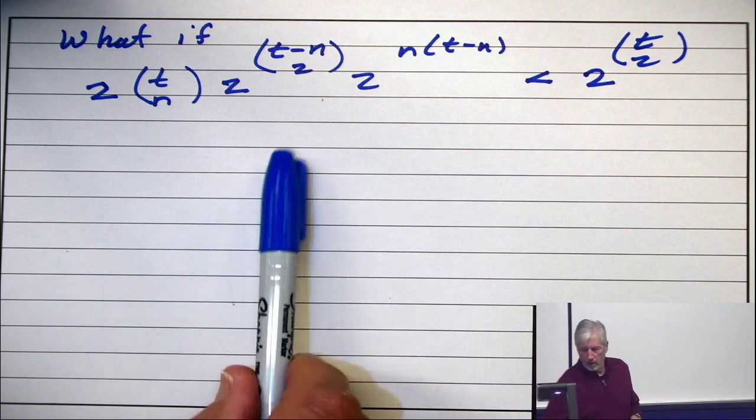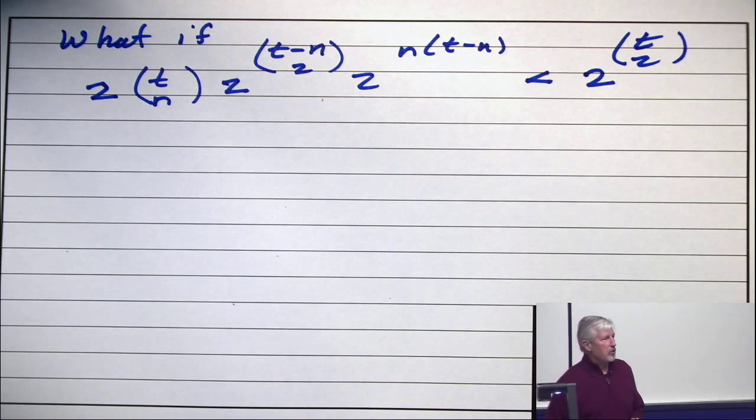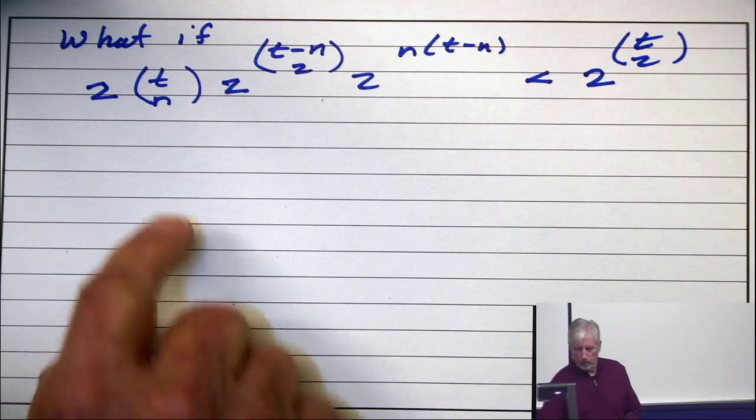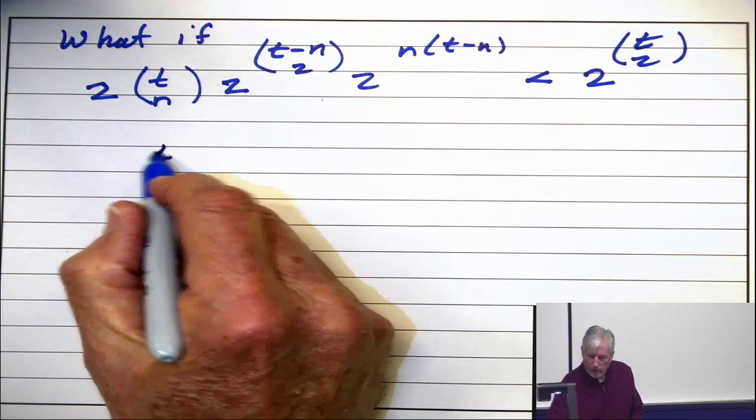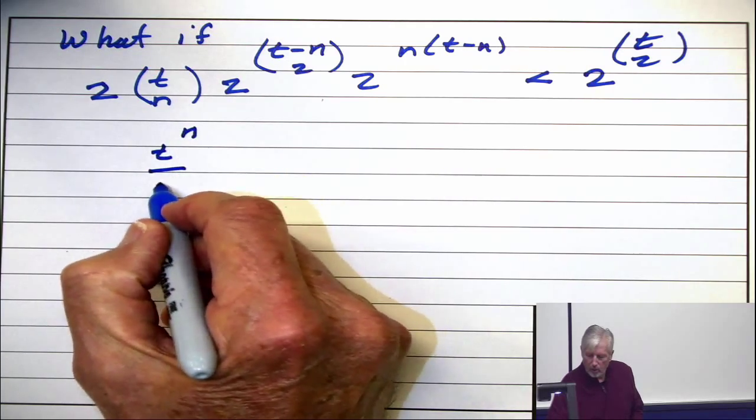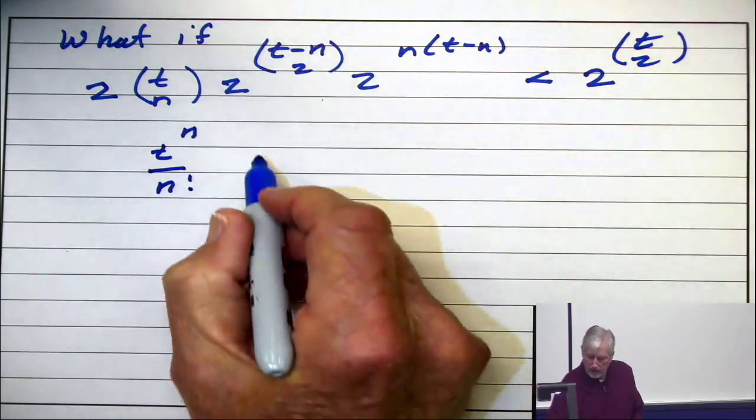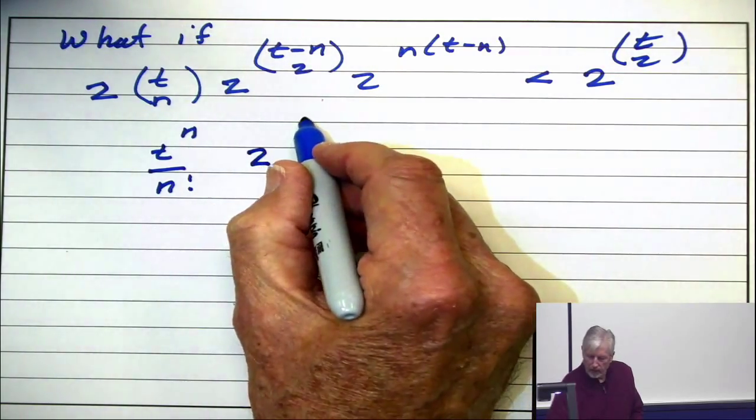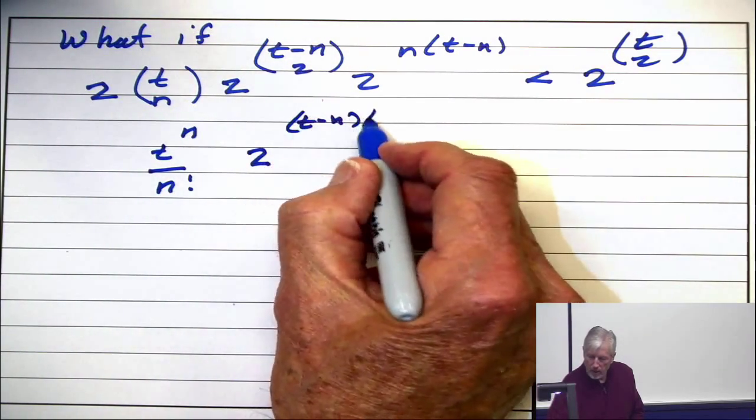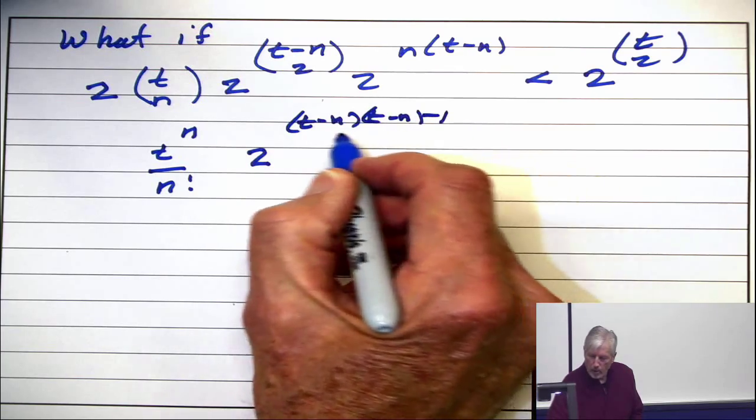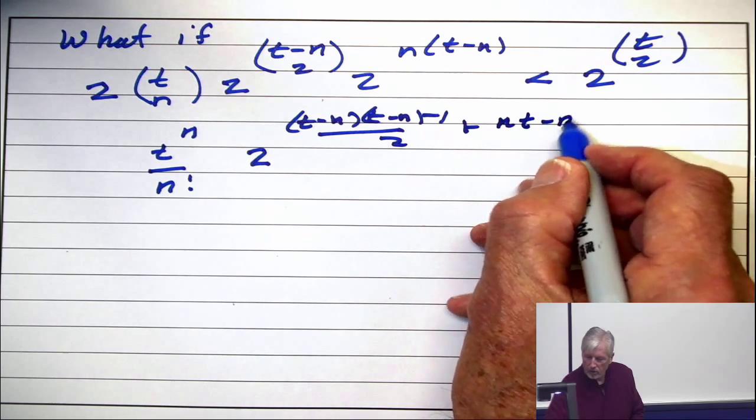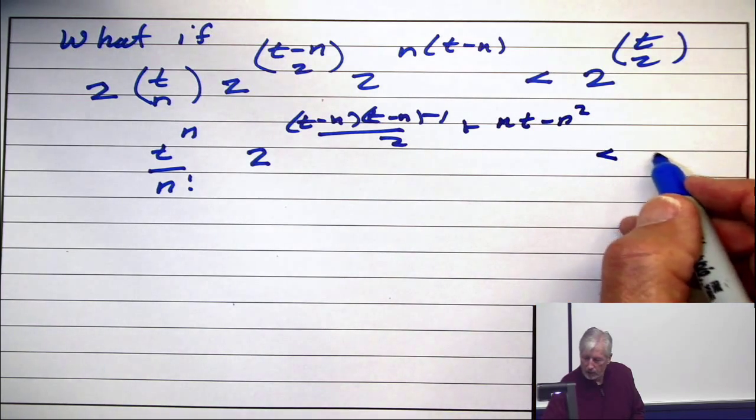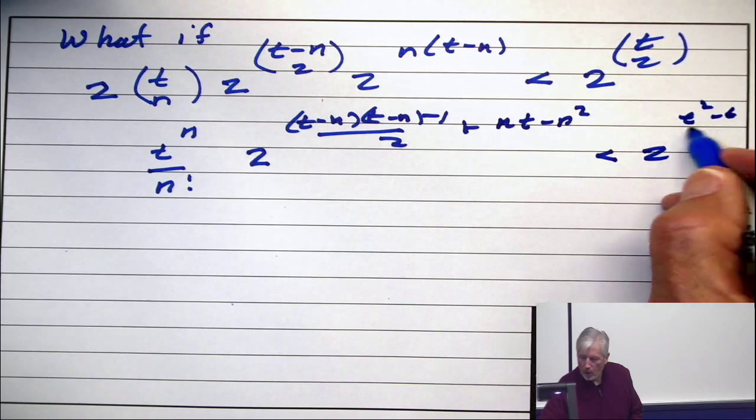All right. Now, how do you analyze an inequality like that? Well, you start writing it out. Now, this term behaves like T to the n over n factorial. This is like T minus n times T minus n minus 1 over 2 plus n T minus n squared less than 2 to the T squared minus T over 2.